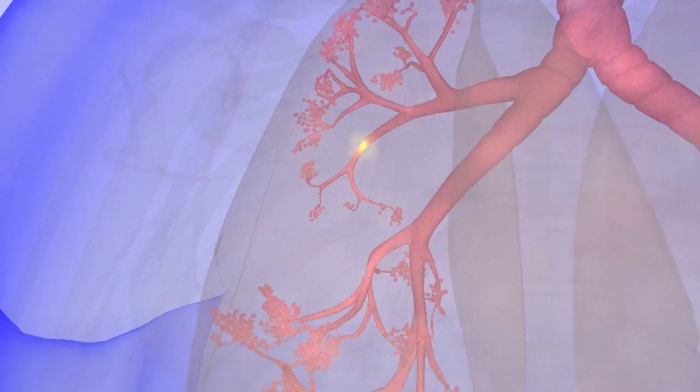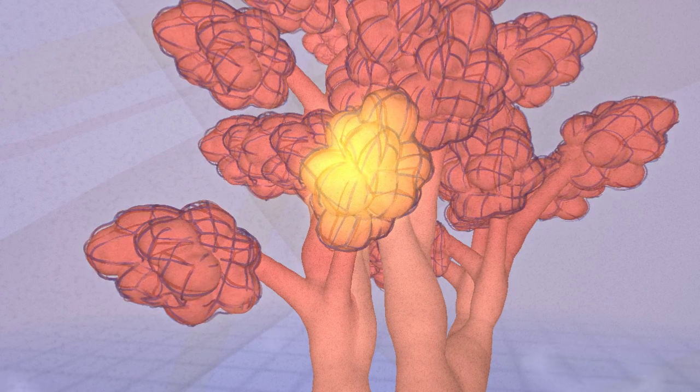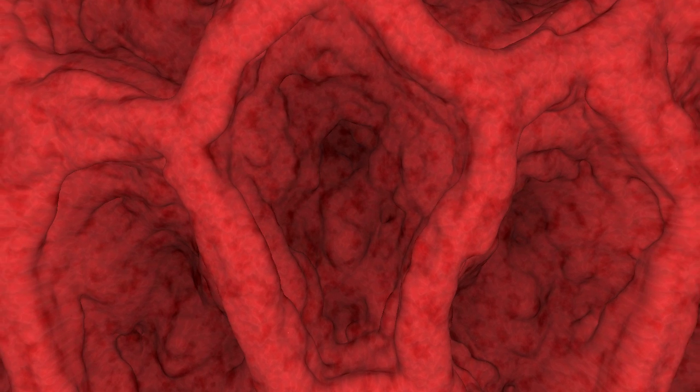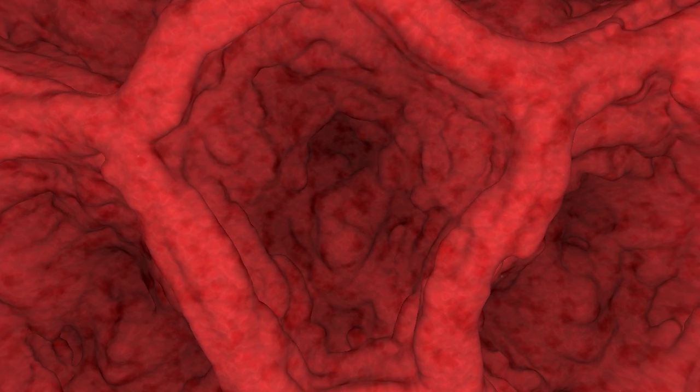Here we see the bacillus reaching the alveolus of the lung, and we're now going to zoom down to the bottom of the alveolus, where we will see the tubercle bacilli busily replicating.